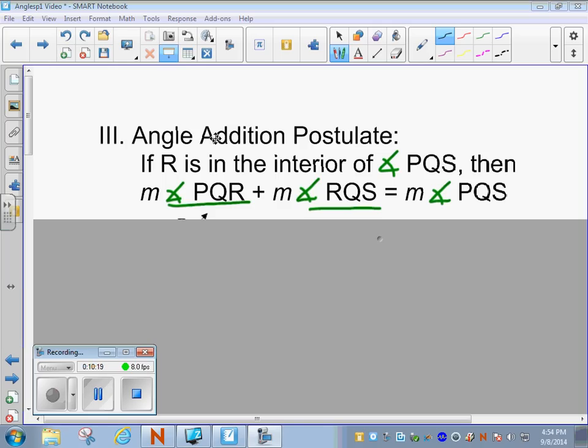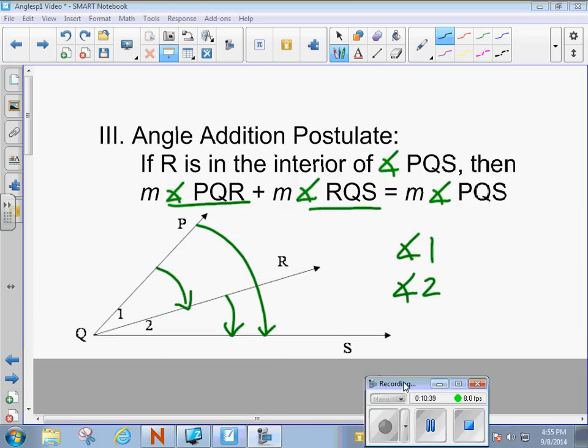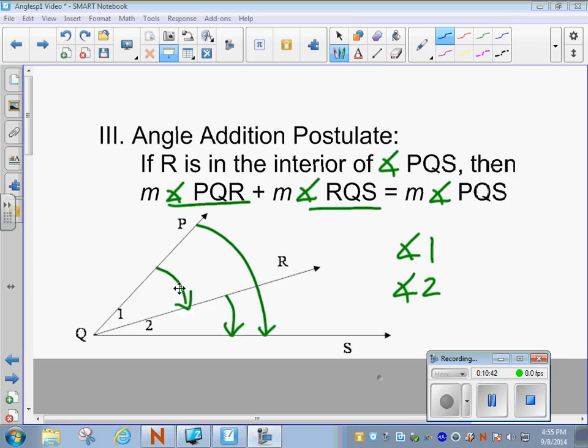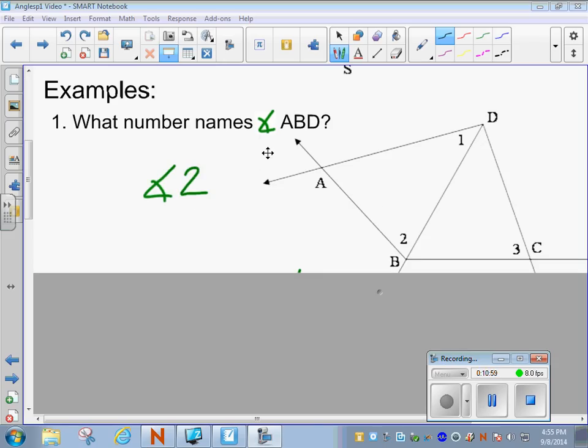Next up we're going to look at the angle addition postulate. It basically says that if R is in the interior of angle PQS, then the measure of PQR plus the measure of RQS is equal to PQS. This is the very formal definition of angle addition postulate. We used something a little bit simpler earlier. Let's take a look at the picture on this one. Basically what all this is saying is angle PQR plus RQS is equal to this big angle. If I add that little angle and that angle together, I get the big angle. Simple enough.